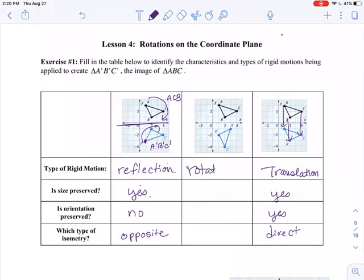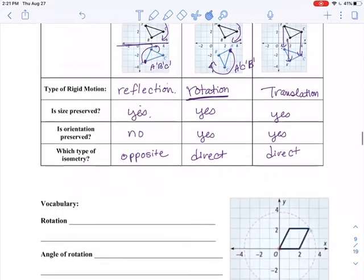And the new one that we have is a rotation. The rotation is just a turning of an object. So notice the orientation stays the same. If I start at A and I go clockwise, this goes A, C, B. If I start at A prime and I go clockwise, it still goes A prime, C prime, B prime. So the orientation is still preserved. The size is preserved. And since the orientation is preserved, this is called a direct isometry. So the new one that we're doing today is rotation.